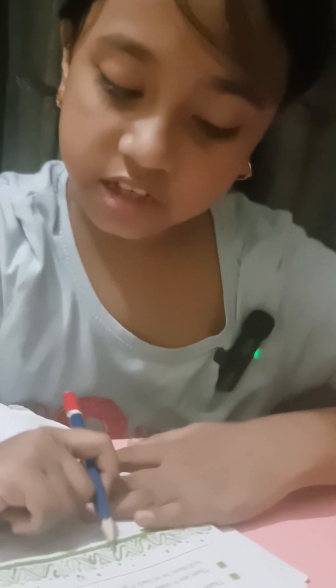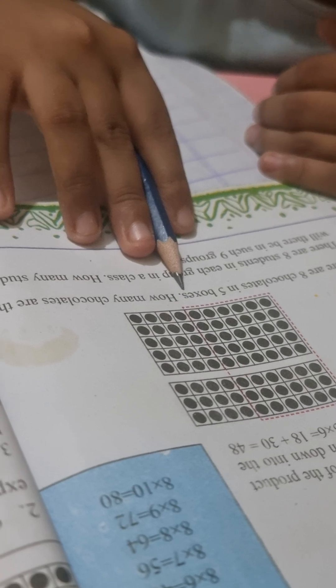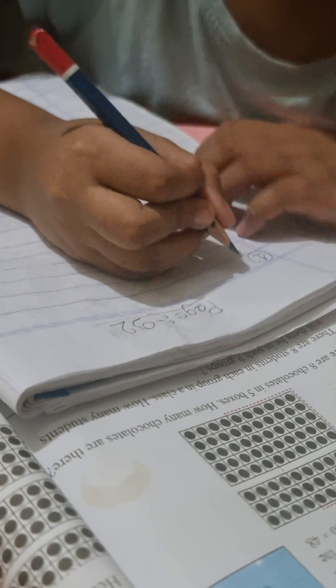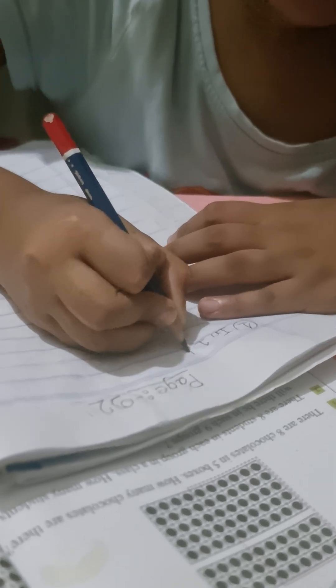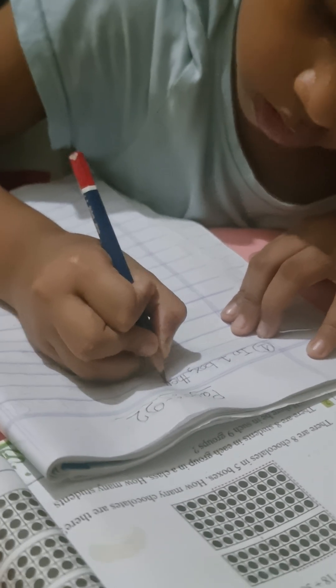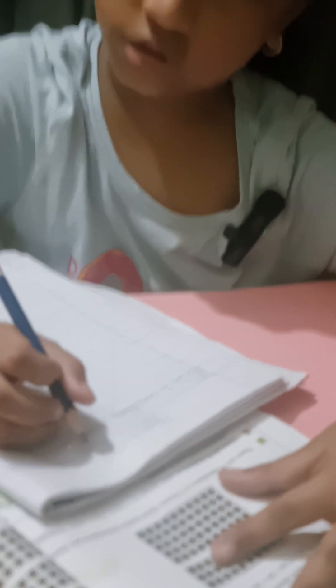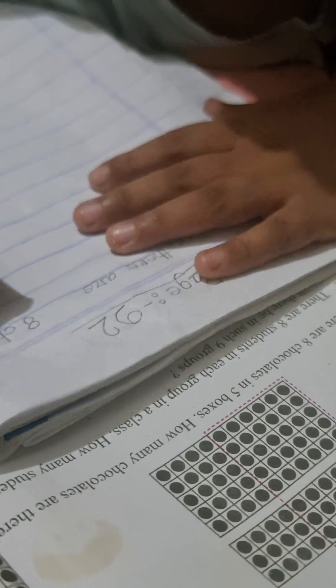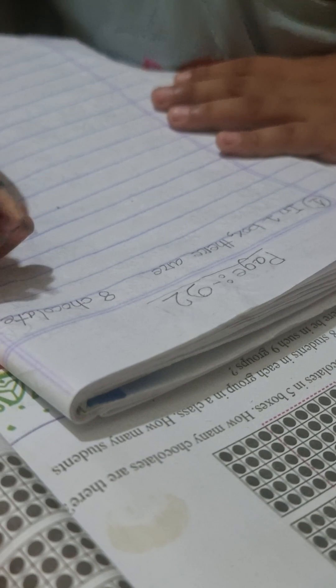Days. Okay, so now I will do page 92, problem number one and two. There are eight chocolates in five boxes. How many chocolates are there? Okay, in one box there are how many chocolates? Eight chocolates.